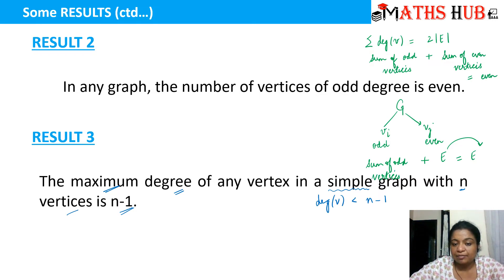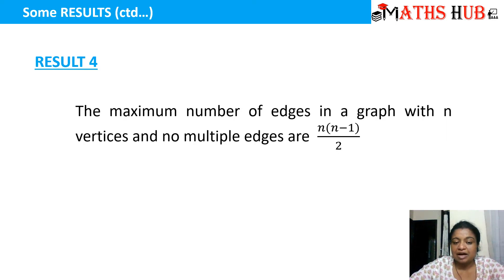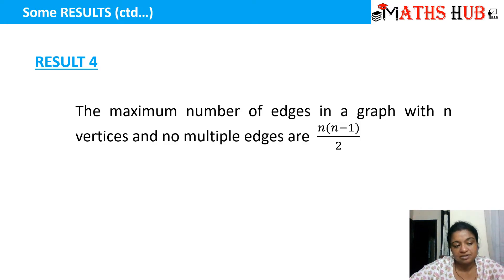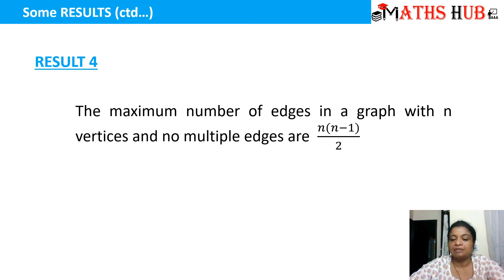Result number 4 says that the maximum number of edges in a graph with n vertices and no multiple edges is n times (n minus 1) divided by 2. So if we have a graph with n vertices and no parallel edges, the maximum number of edges in that graph will be n(n−1)/2.